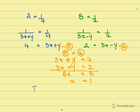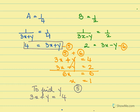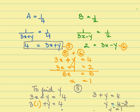To find y, I substitute x equals 1 into equation 5: 3x plus y equals 4. So 3 times 1 plus y equals 4, giving 3 plus y equals 4, so y equals 4 minus 3, and y equals 1. Therefore the final answer is x equals 1 and y equals 1.